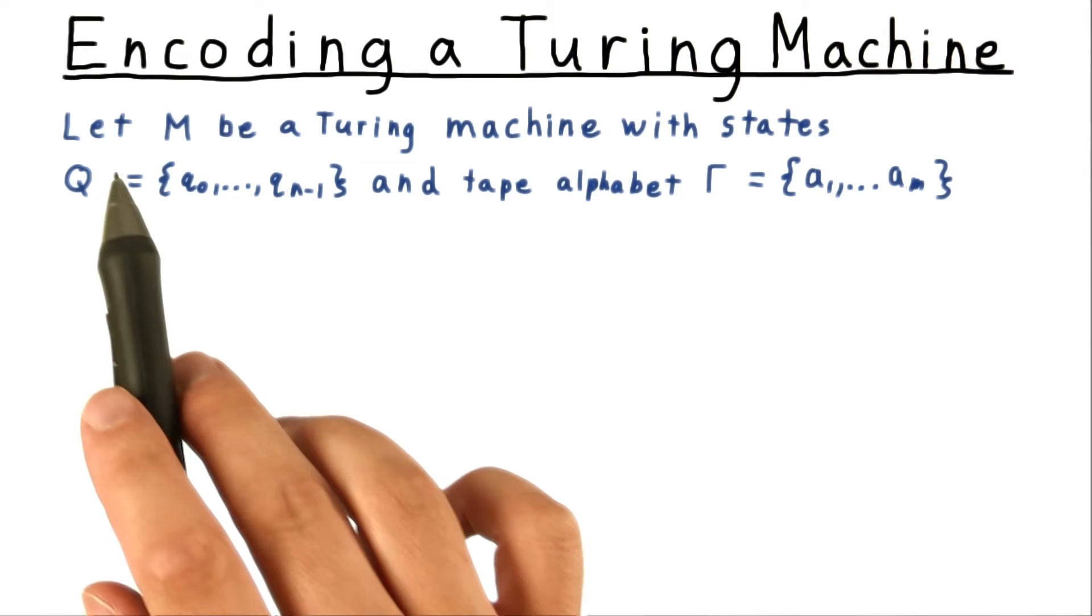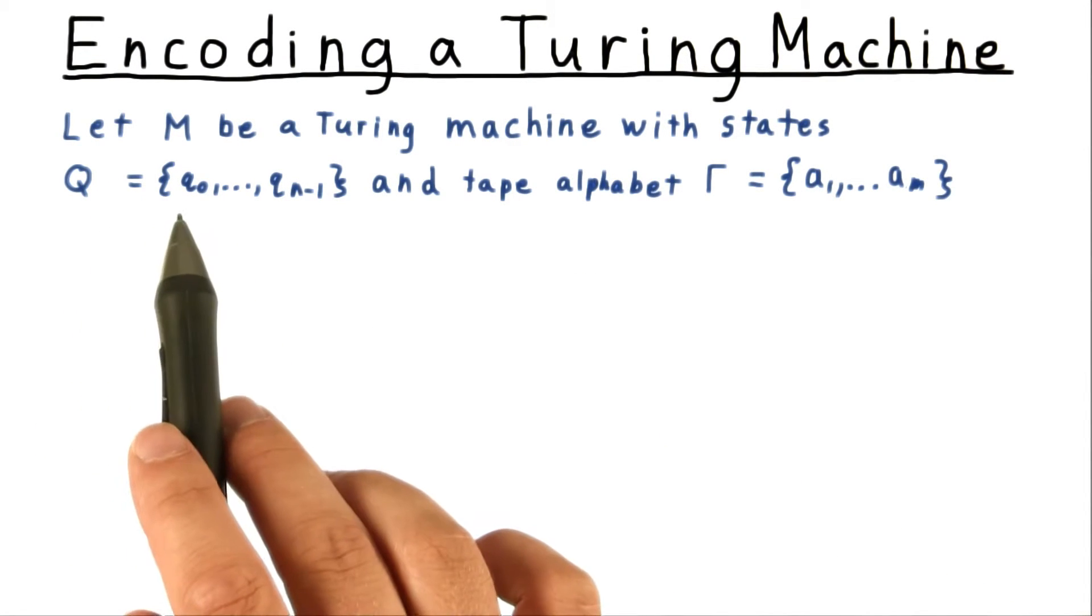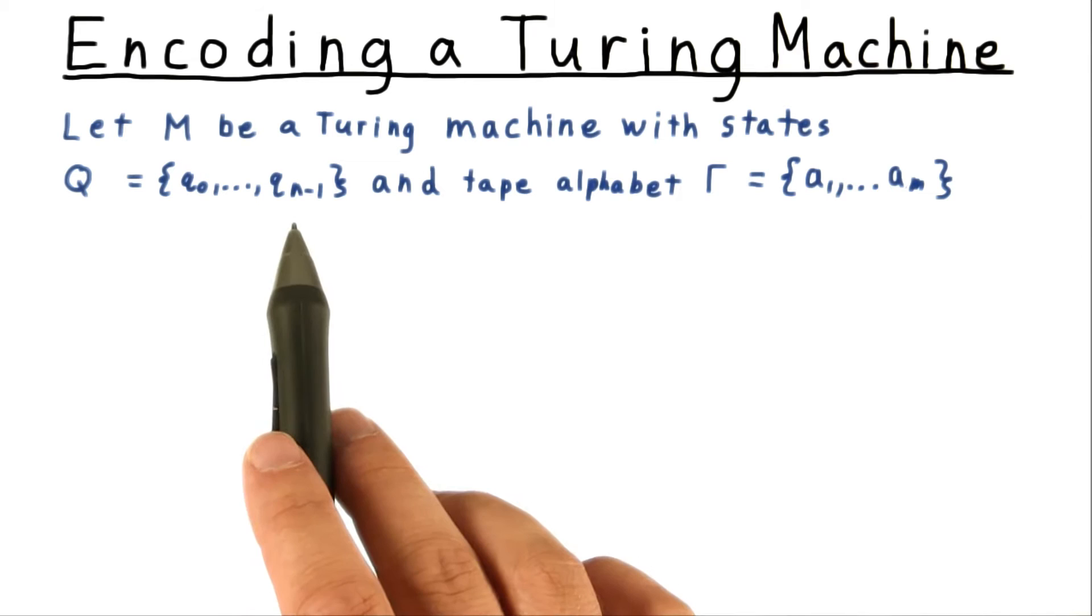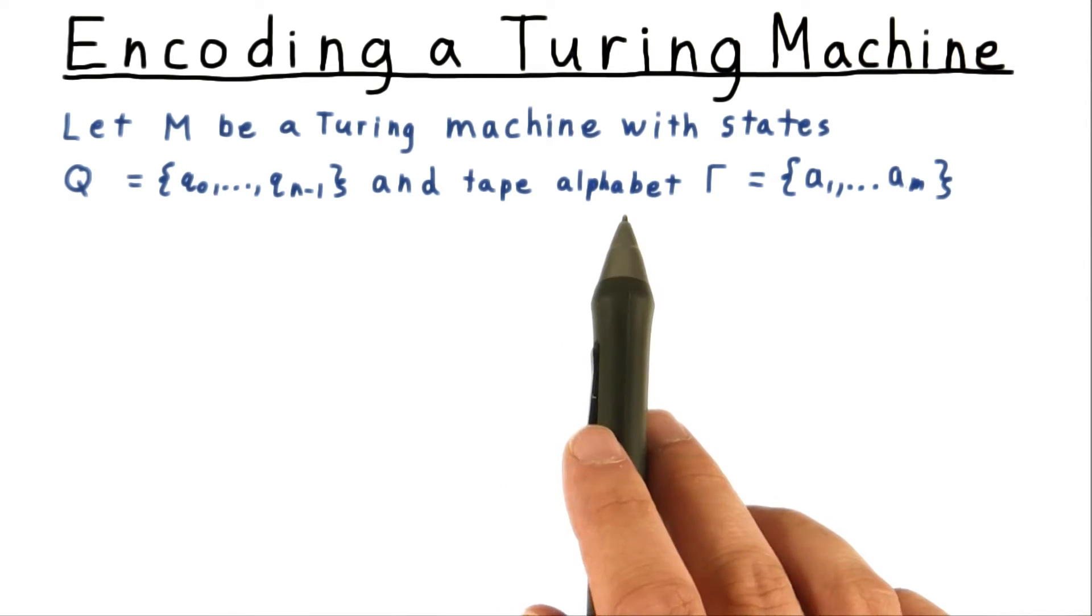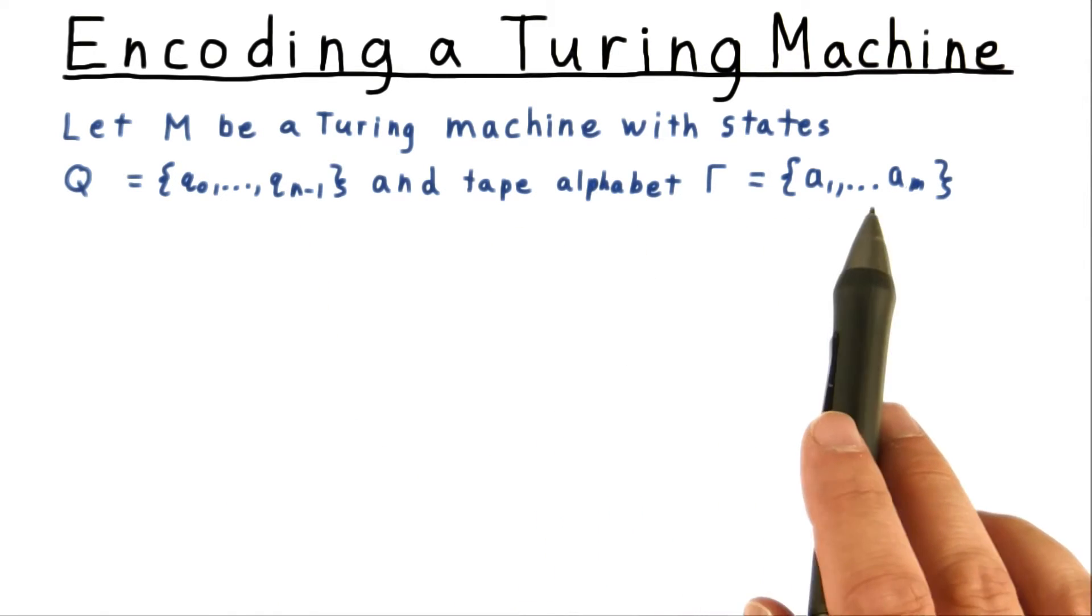As we'll see, one solution is essentially to enumerate all the symbols and states and represent them in binary. There are lots of ways to do this. The way we're going to do it is a compromise of readability and efficiency. So we'll let M be a Turing machine with states q0 through qn minus 1, and we'll let its tape alphabet be gamma a1 through am.